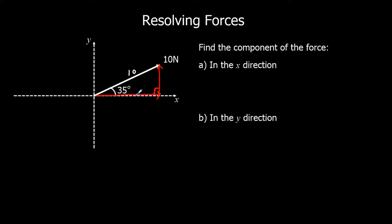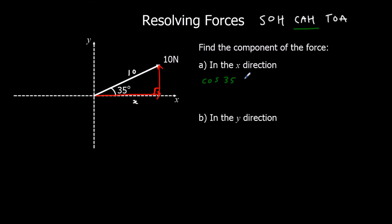So in the x-direction, we're going to work out this force. We're going to use SOH-CAH-TOA, and we've got the hypotenuse and the adjacent. So that means we're using CAH, so cos 35 equals adjacent over hypotenuse, which means x equals 10 cos 35.